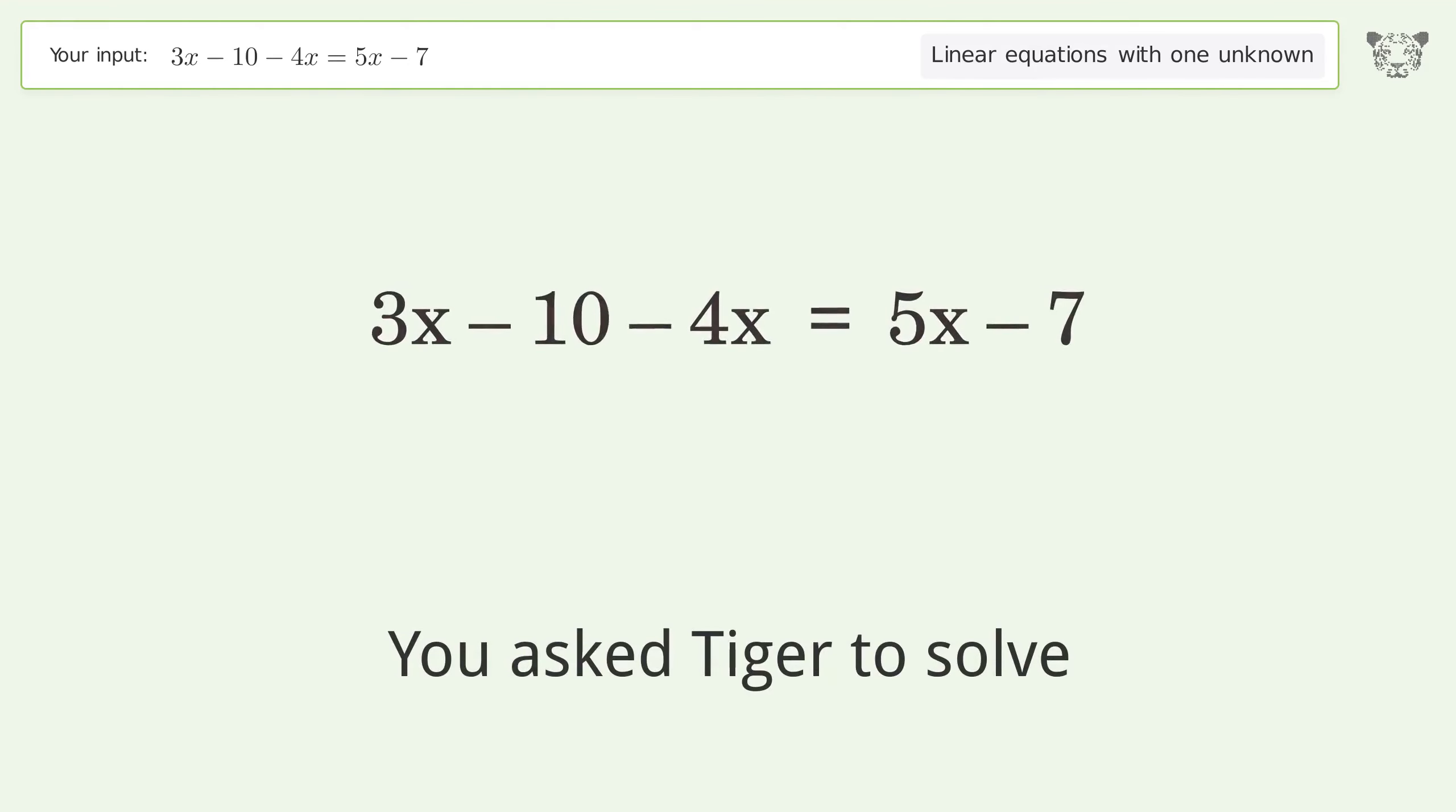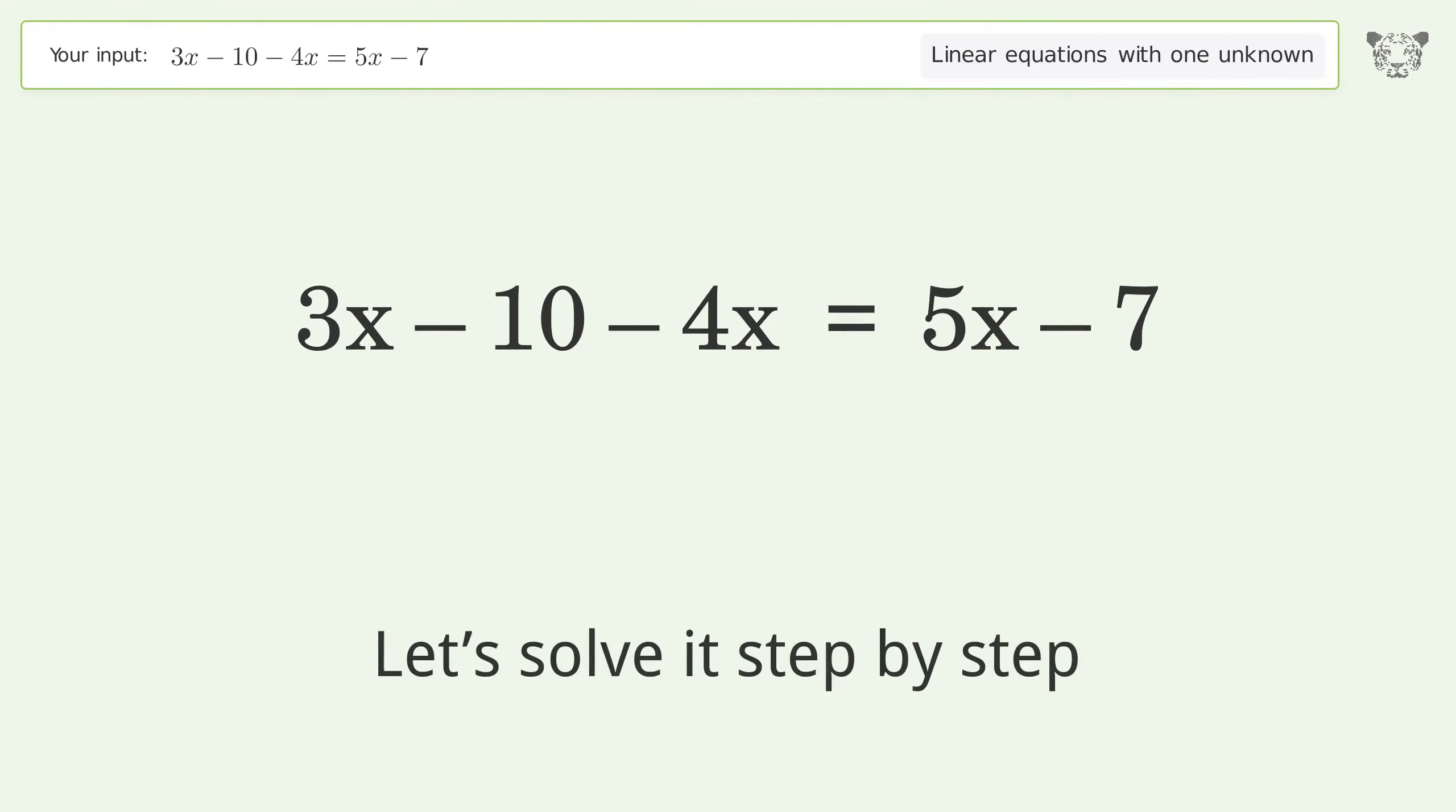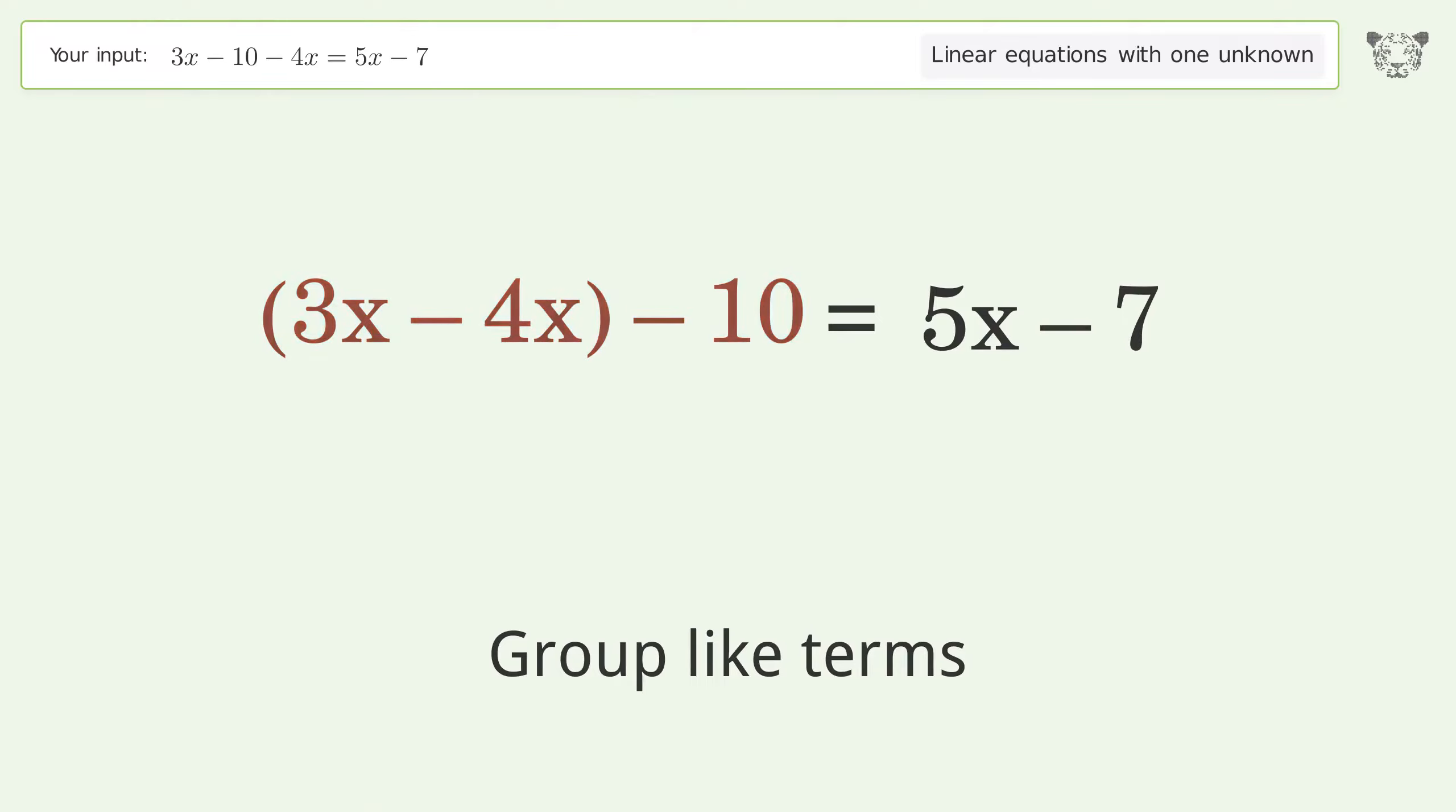You asked Tiger to solve this. This deals with linear equations with one unknown. The final result is x equals negative one over two. Let's solve it step by step. Simplify the expression, group like terms, combine like terms.